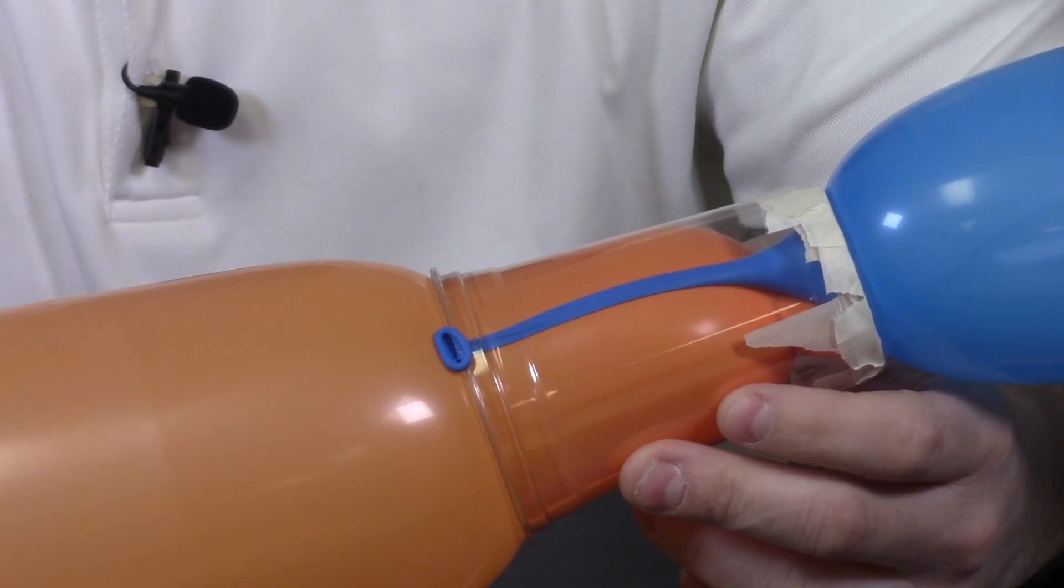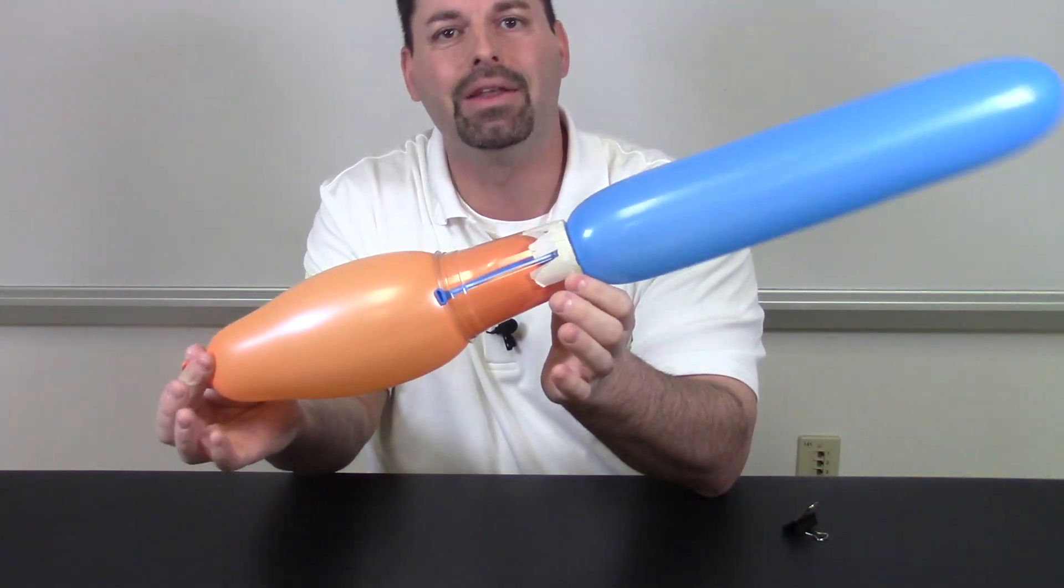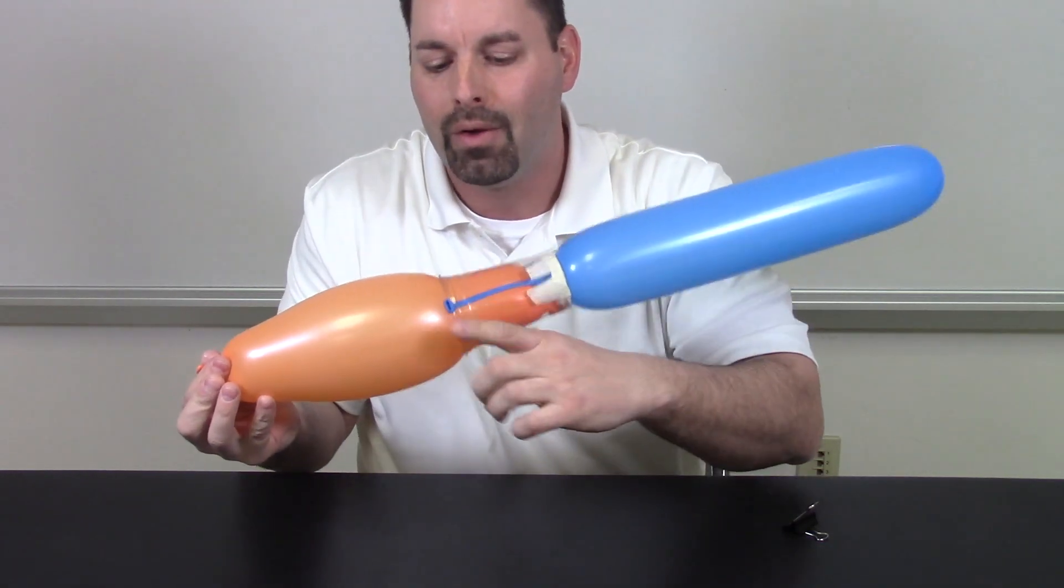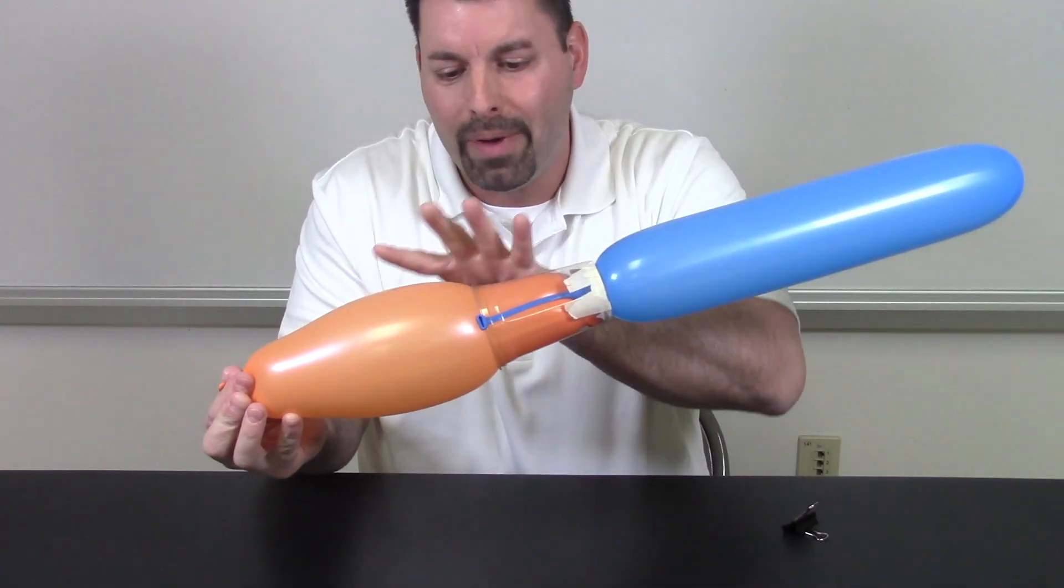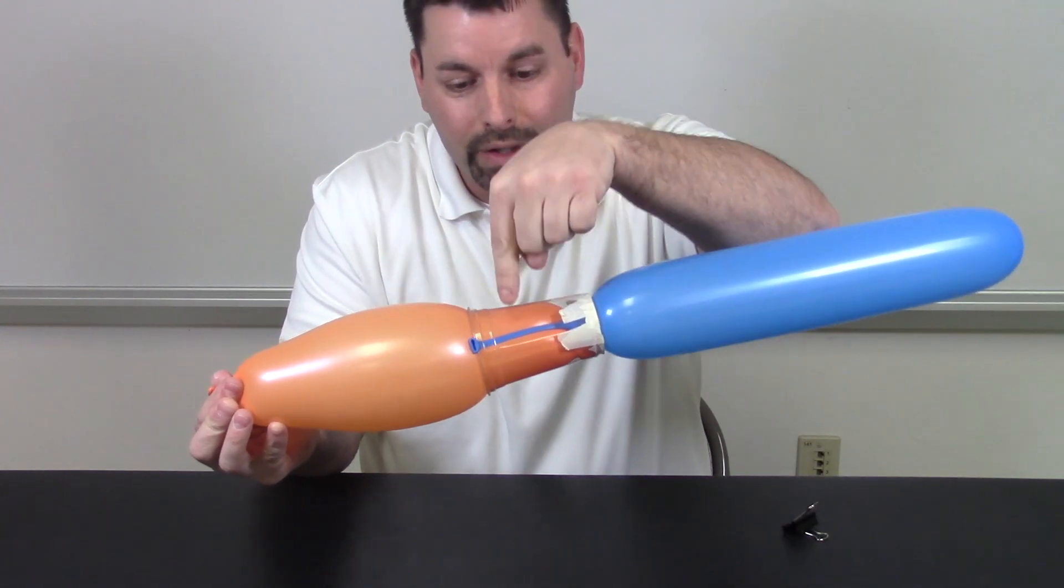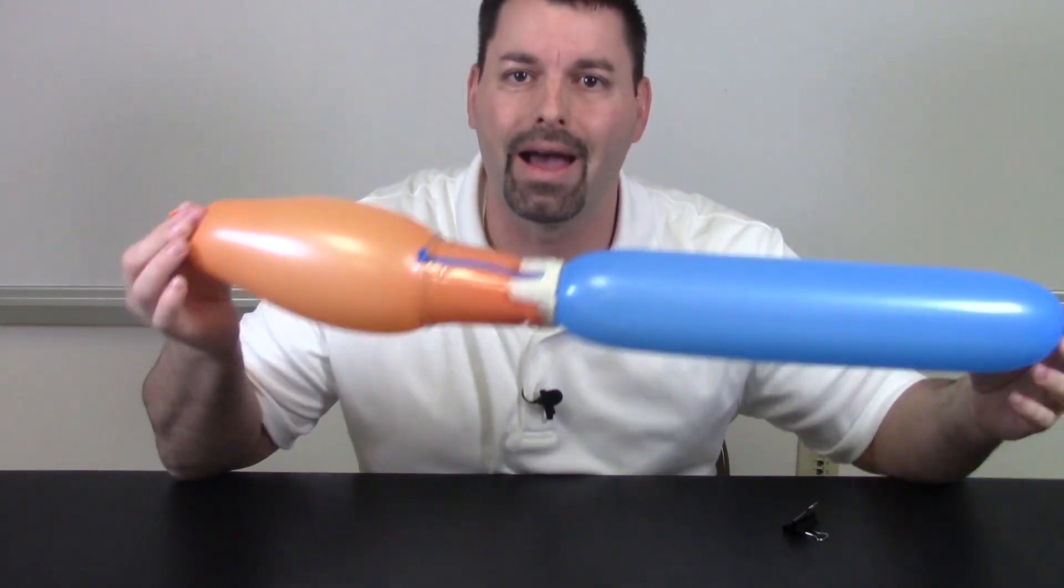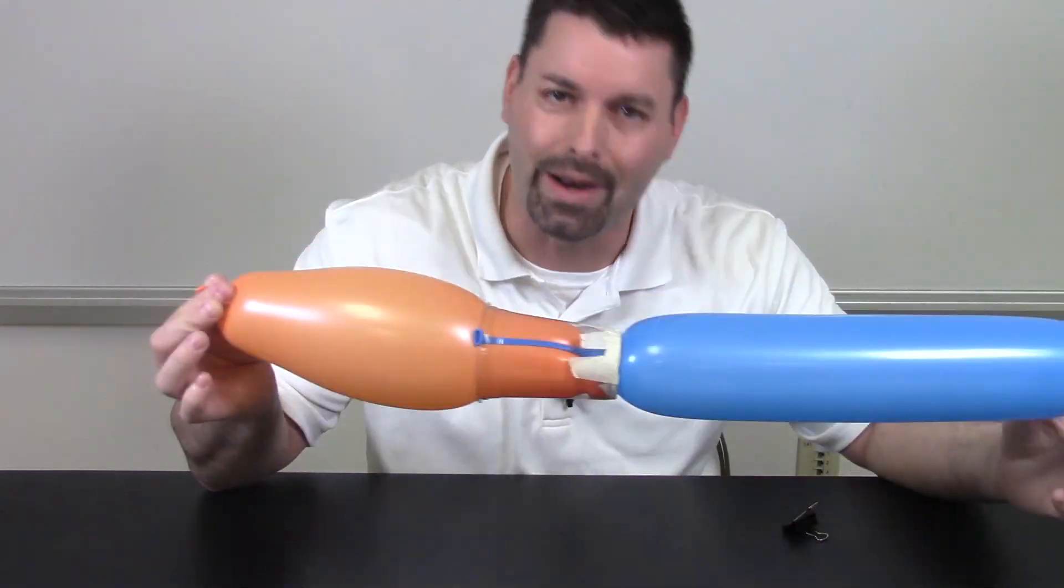So think this through. What do you think will happen when I let go of the orange balloon? Well, as I let go of the orange balloon, the air inside the balloon makes the balloon get smaller, which should release the blue balloon, and I think I have a two-stage rocket ready to go.